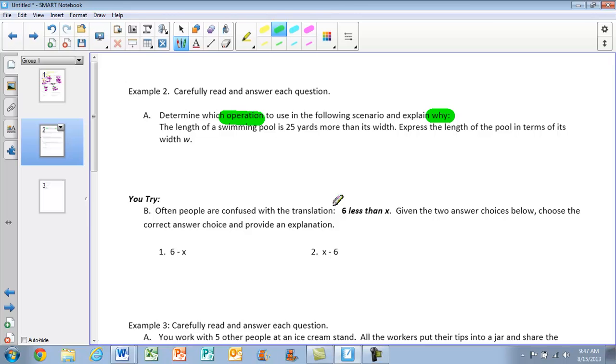The length of a swimming pool is 25 yards more than its width. Express the length of the swimming pool and its width. So I also need to express here. So the directions are asking me to do three things. It's kind of tricky. So highlighting your keywords, checking back to make sure you covered it all is important.